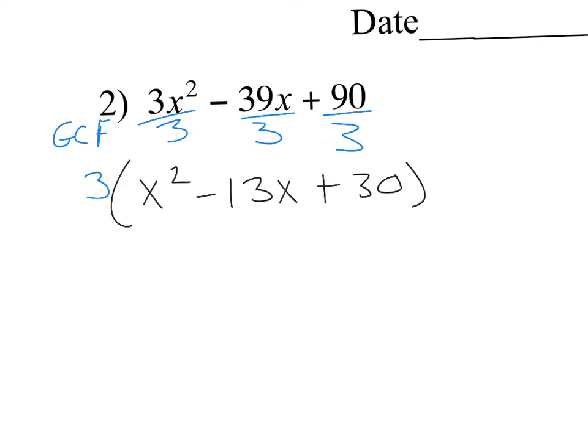Is a equal to one? The coefficient in front of x squared — there's no visible number there, so a equals one. That's the easy case. Everyone wants to do it the hard way, but this is actually the easiest one. When a equals one, you just pop it open into two binomials. You factor x squared as x times x.